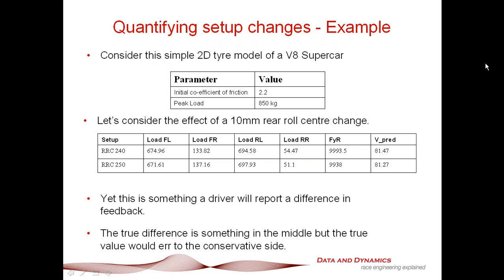Let's take a look at an old-style V8 supercar that was when it had the rear live axle in it. Look at a typical V8 supercar tire model. Initial coefficient of friction is 2.2, and the peak load is 850 kilos. When you do a rear roll center change, say, typically you would go from a rear roll center of 240 to about 250. Take a look at the differences in these tire loads in terms of kilogram force. That's your difference in terms of the rear longitudinal force. It's barely 0.2 of a K an hour.